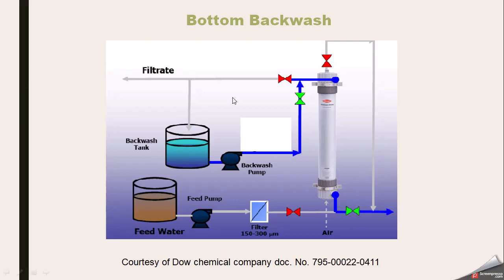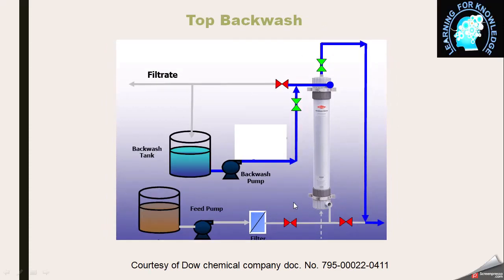In bottom backwash, the pump takes water from the backwash tank; water enters from the top, the top valve is closed, and cleaning water exits from the bottom. In top backwash, water enters the module through the inside of the membrane, goes outward, and exits from the top carrying dirt and cleaning material.